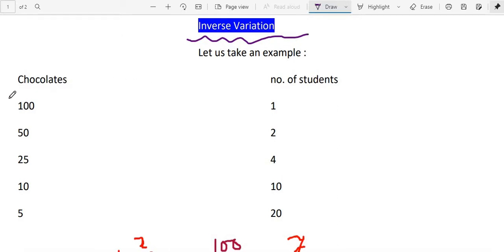Suppose I have 100 chocolates. I want to give to only one student. How many chocolates will you get? 100. Now I want to give to two students. How many each will get? 50, 50.